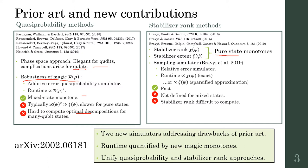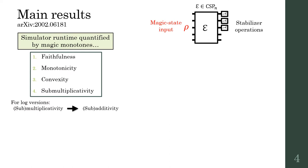In this paper we introduce two simulation techniques that address these shortcomings, where runtime is quantified by newly defined computable monotones. We also shed light on the formal connections between quasi-probability and stabilizer rank methods, which previously seemed unrelated.